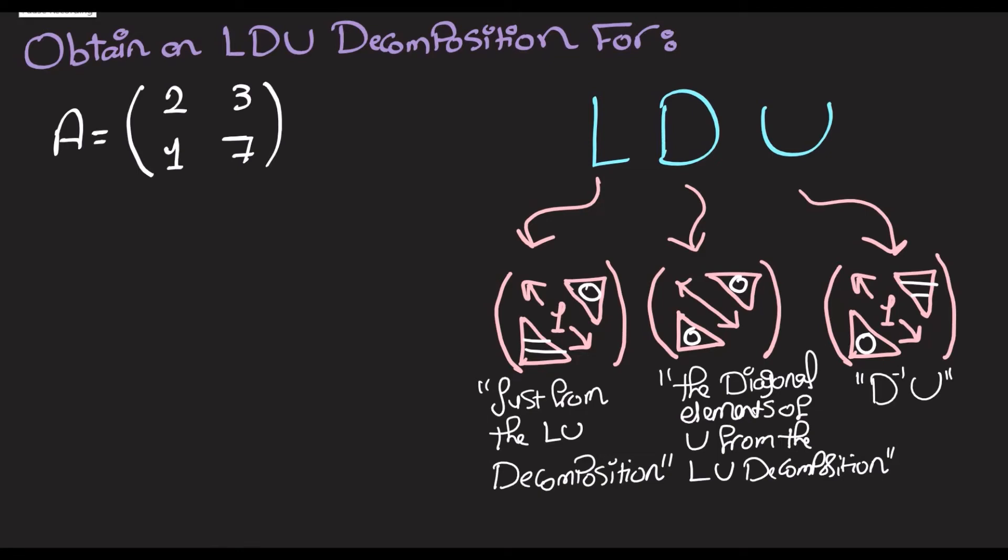In this video we'll be working on the LDU decomposition for a matrix. Here, L is a unitary lower triangular matrix, just like from LU decomposition. D is a diagonal matrix, and U is a unitary upper triangular matrix.